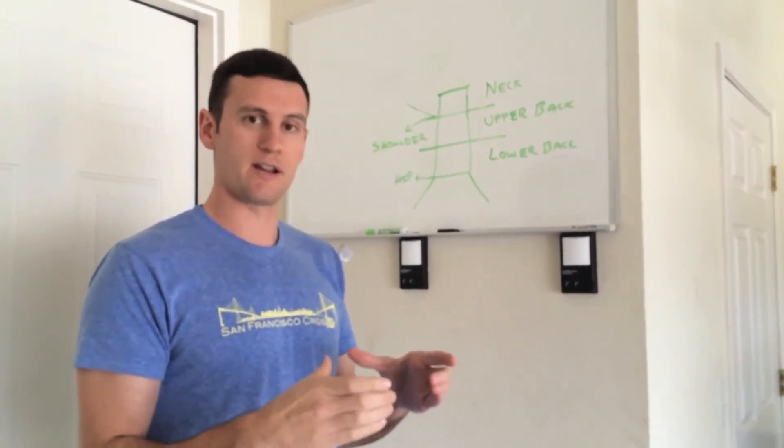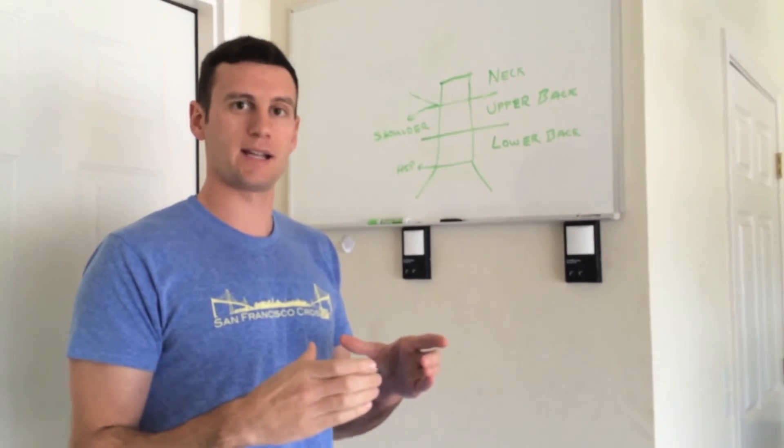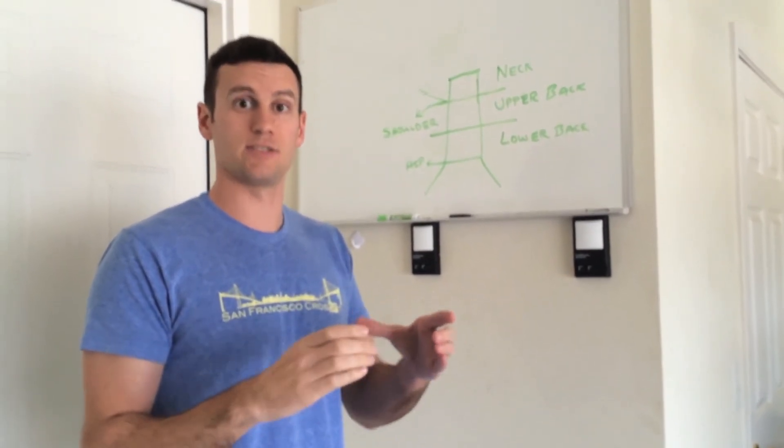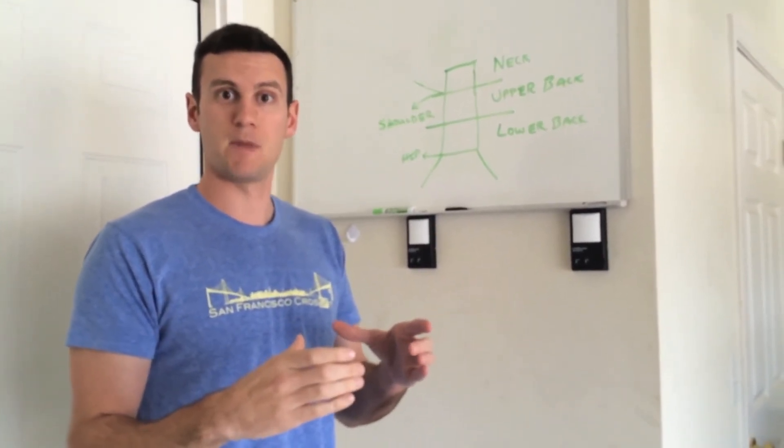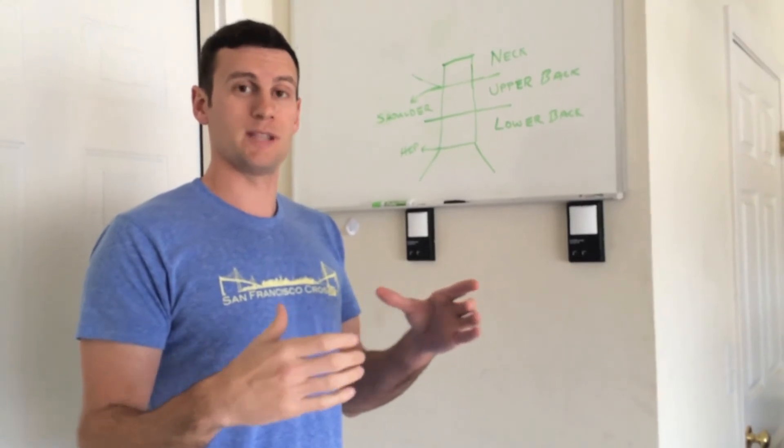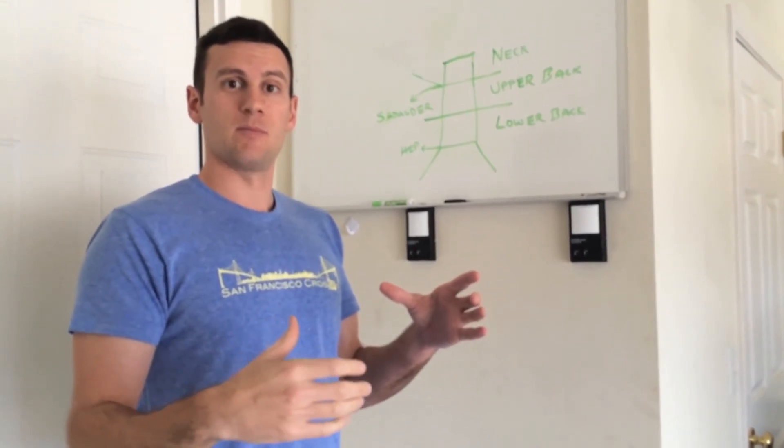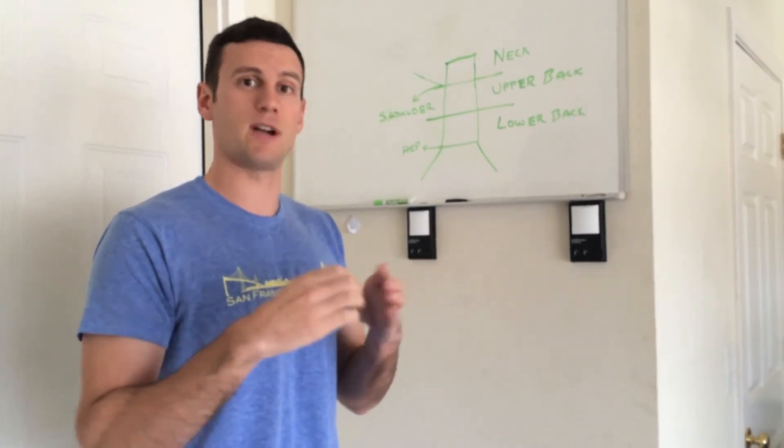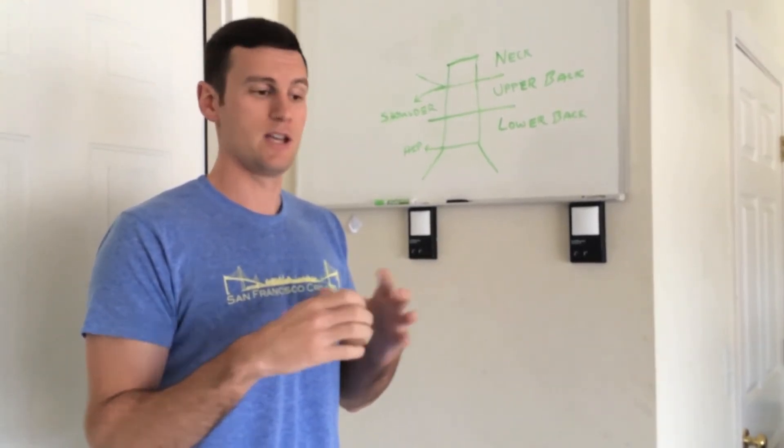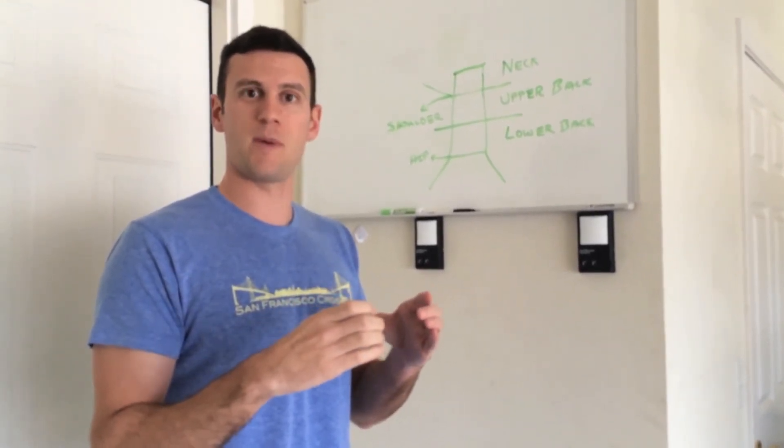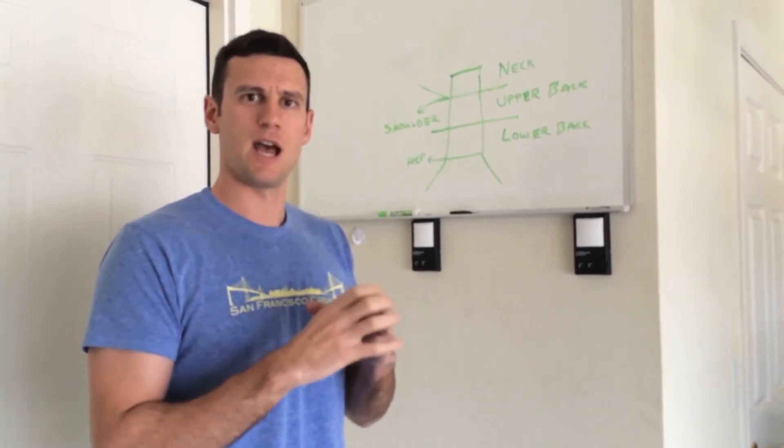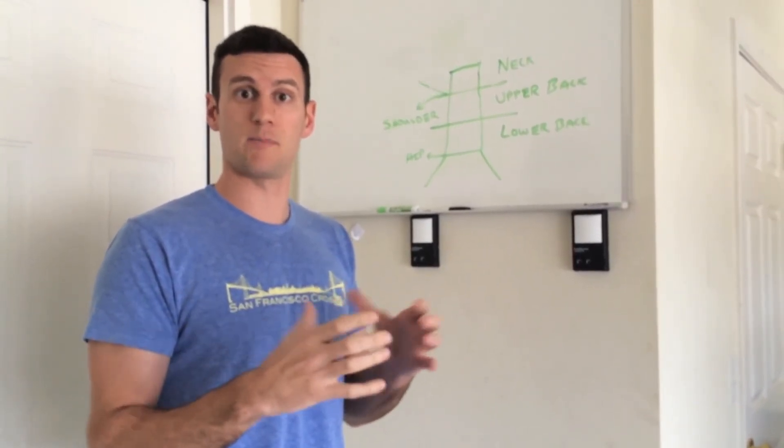Now from there, we take a big breath in with our belly, blow it out and we tighten down and we try to shrink wrap our spine. It's kind of the way we say it. So we want the muscles on the front and the back of the spine to just come together as tightly as possible to shrink wrap our spine.